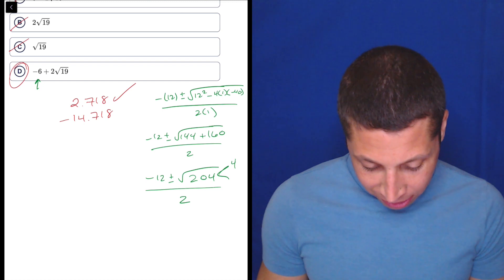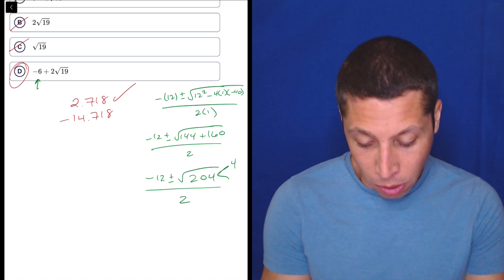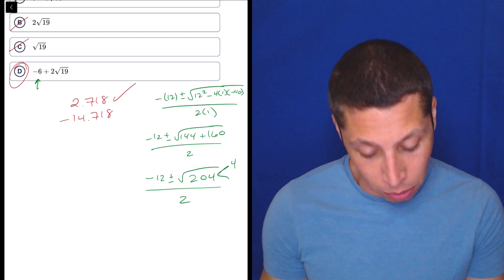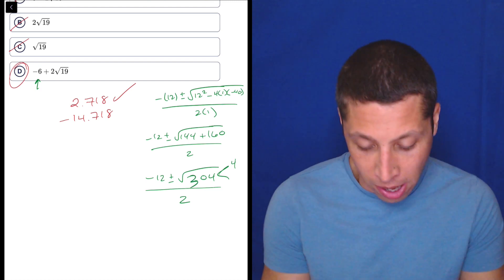Really? So is this even going to work? Am I wrong here? Yeah, because 144 plus 160 is not 204. It's 304. See, this is why you don't want to do this.